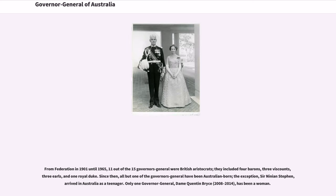From Federation in 1901 until 1965, eleven out of the fifteen Governors-General were British aristocrats; they included four barons, three Viscounts, three Earls, and one Royal Duke. Since then, all but one of the Governors-General have been Australian-born — the exception, Sir Ninian Stephen, arrived in Australia as a teenager. Only one Governor-General, Dame Quentin Bryce (2008–2014), has been a woman.